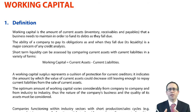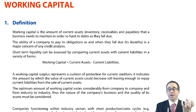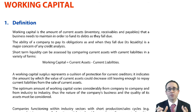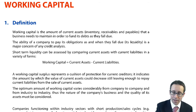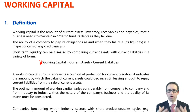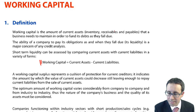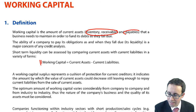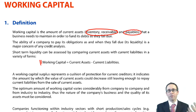What we need to do is ensure that we have a sufficient level of current assets within our business to be able to fund or pay off our liabilities — i.e. the payables within our business. The difference between current assets and current liabilities is referred to as working capital. So working capital is current assets less current liabilities. Current assets are your inventory and receivables — that's what makes the business operate.